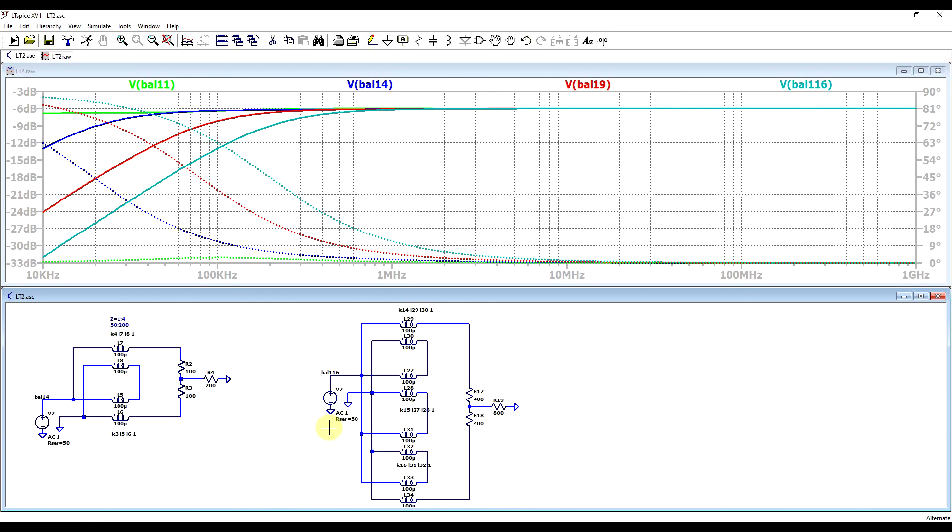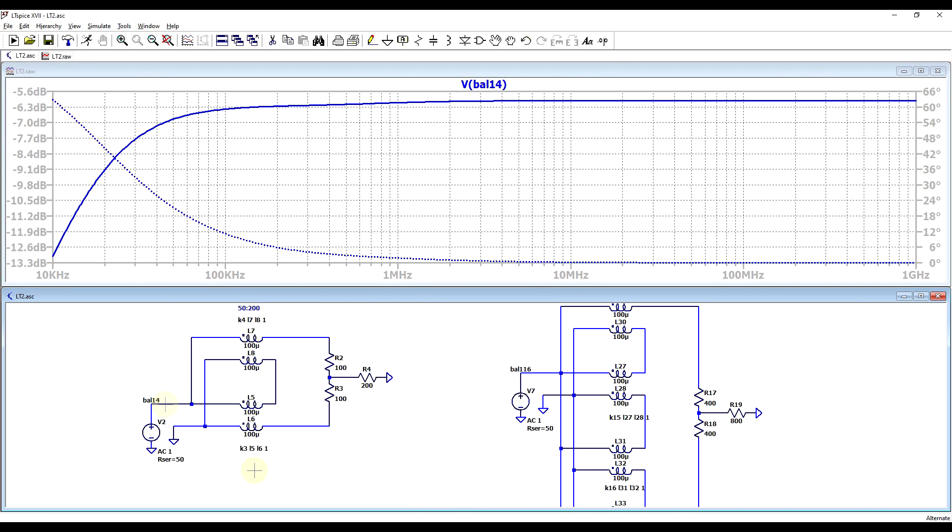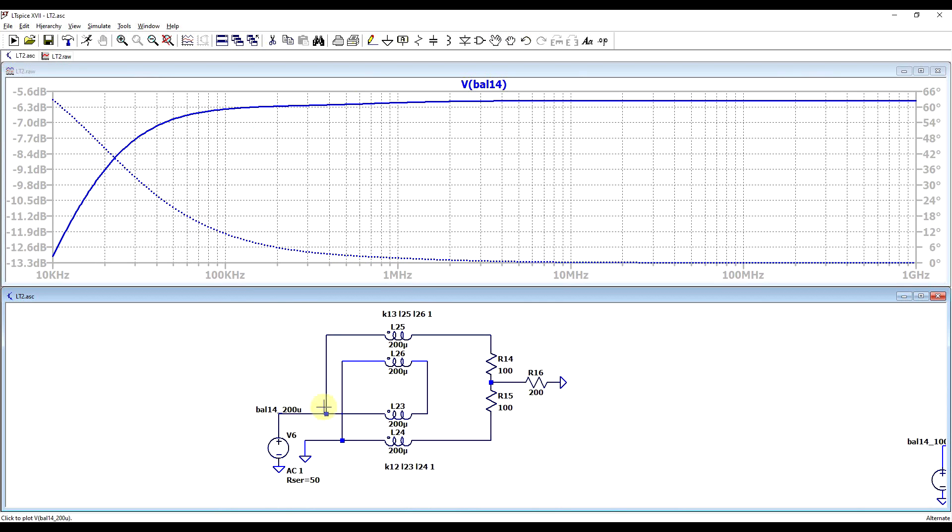Now one obvious solution is to use larger inductance values. So if we compare the 1 to 4 balun with 100 microhenry inductors to a 1 to 4 balun with 200 microhenry inductors, the larger values are giving us a better result.